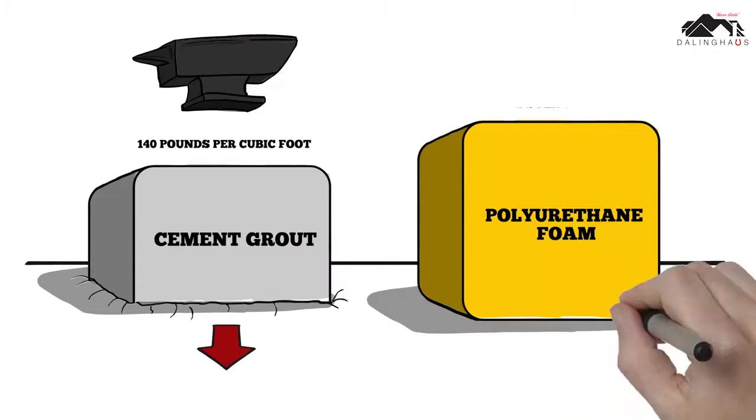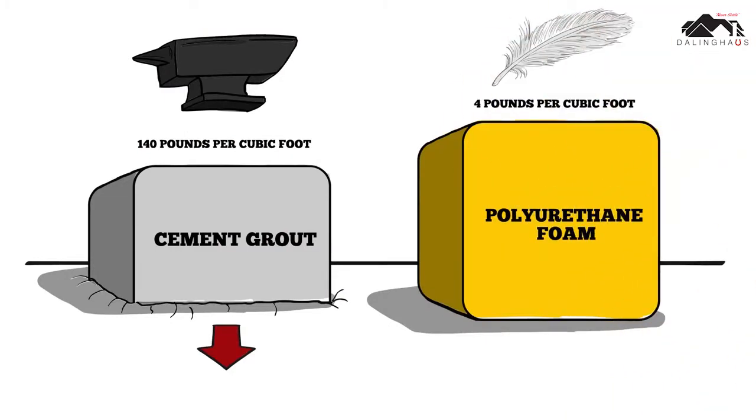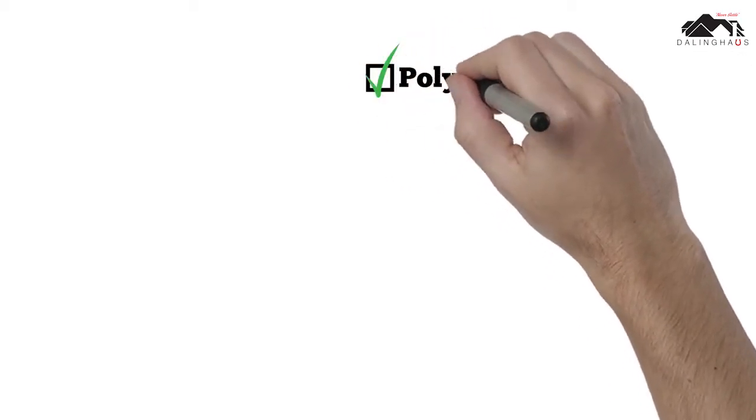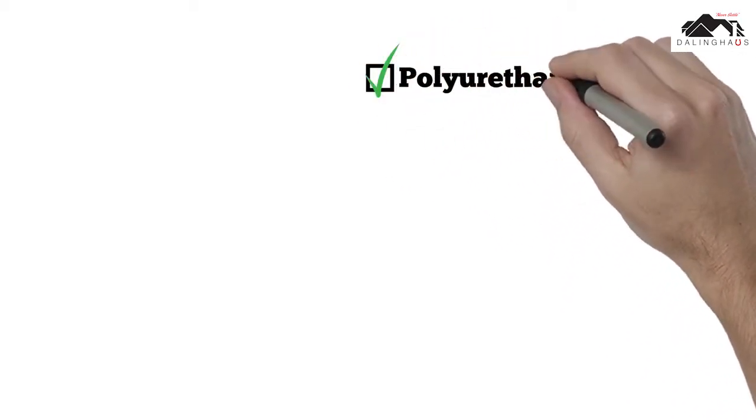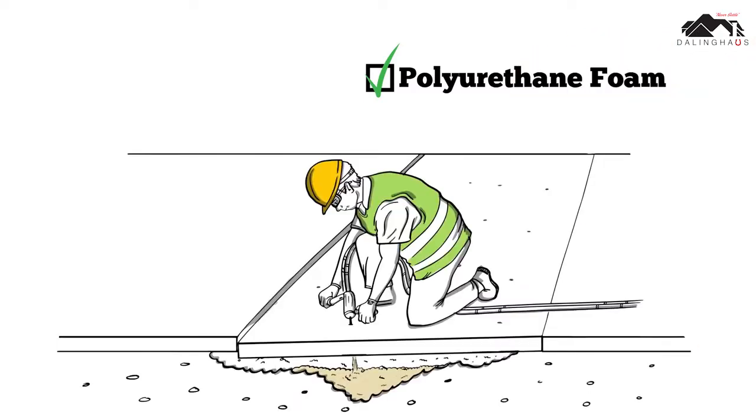Because cement is much heavier than polyurethane, it's likely to sink again over time. Instead, there's a better solution. It's less messy and far more durable than mudjacking and can be done at a fraction of the cost of replacement.